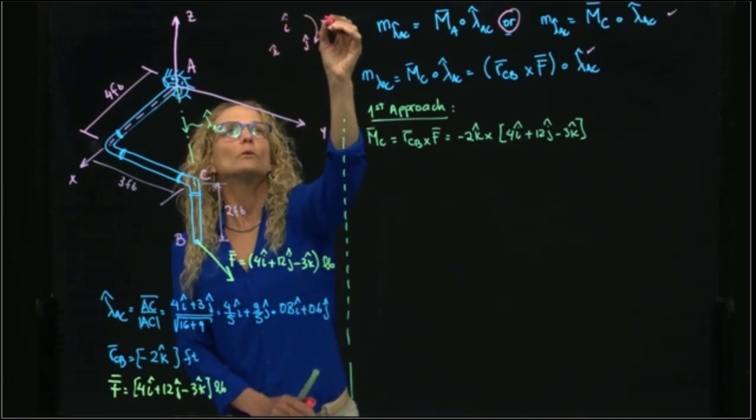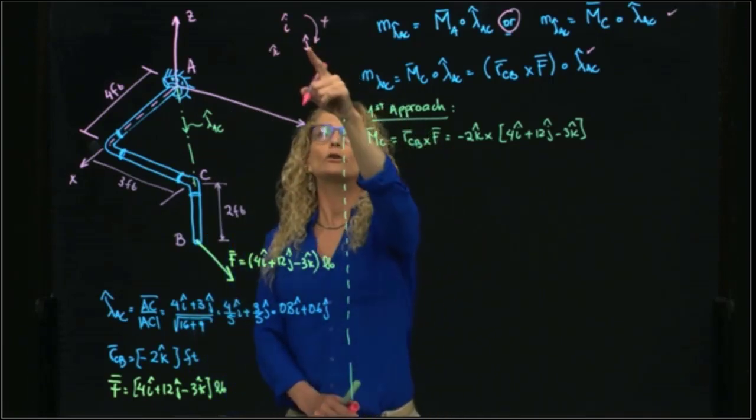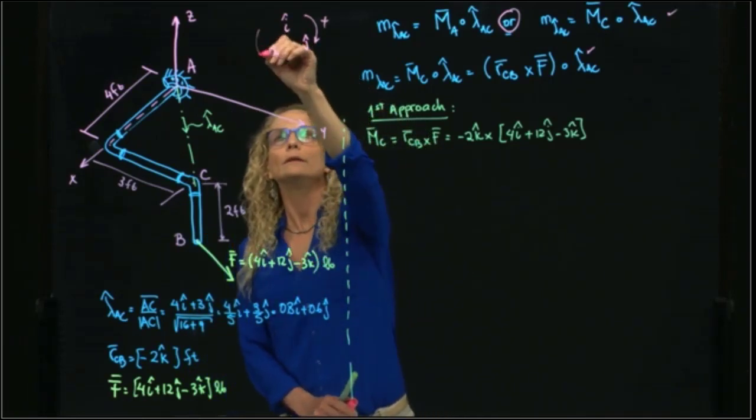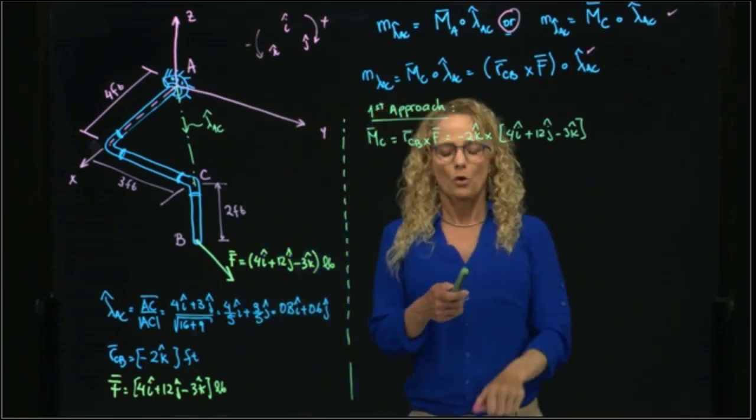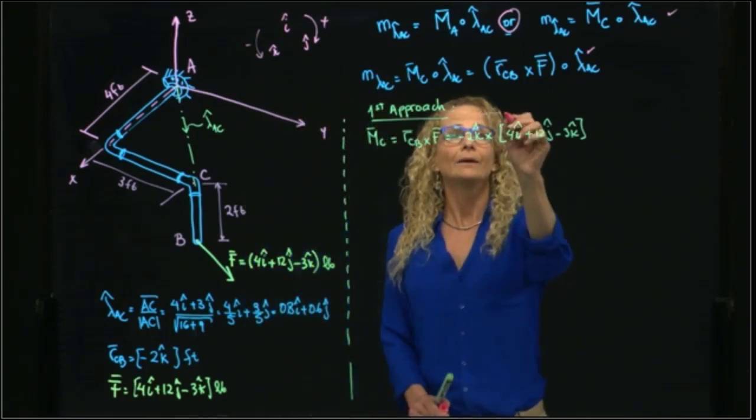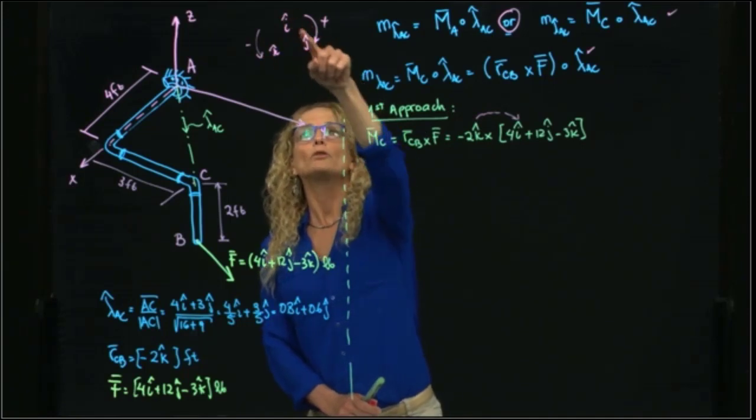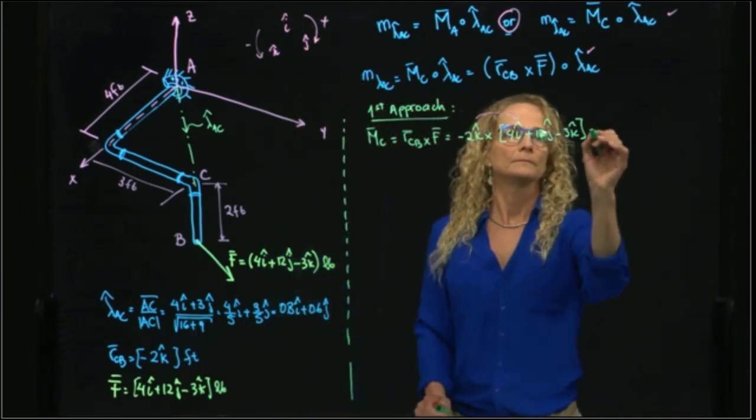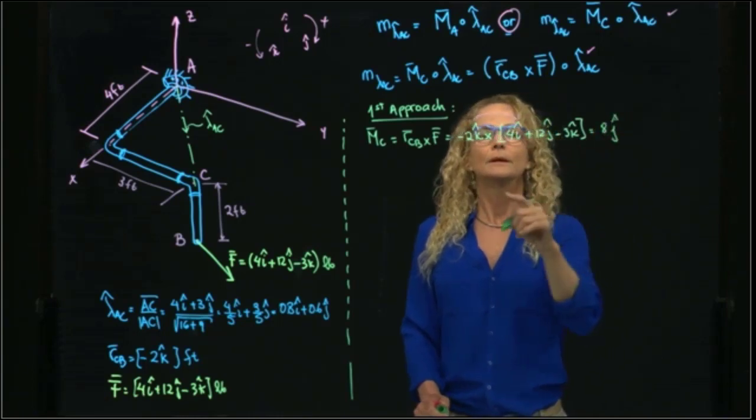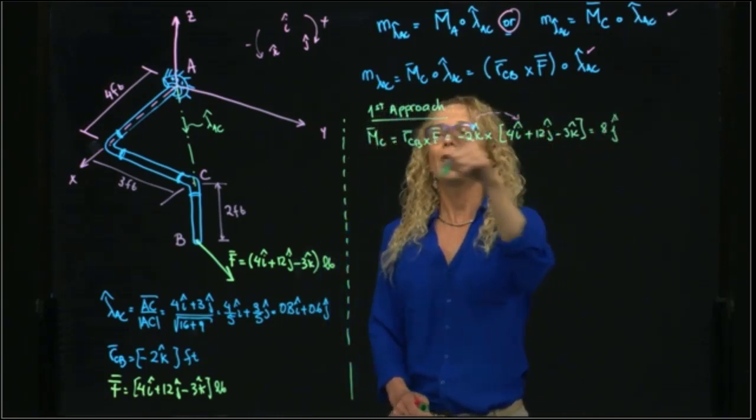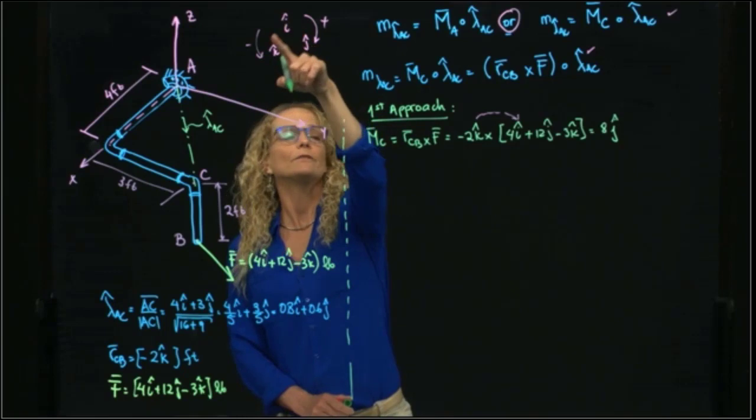I know that i cross j is k, but in case that I go in this direction, it's negative. So k cross i, I get positive j. So that will be 8 in j. And then k cross j is negative i, with this negative it's positive, and that will be 24i.